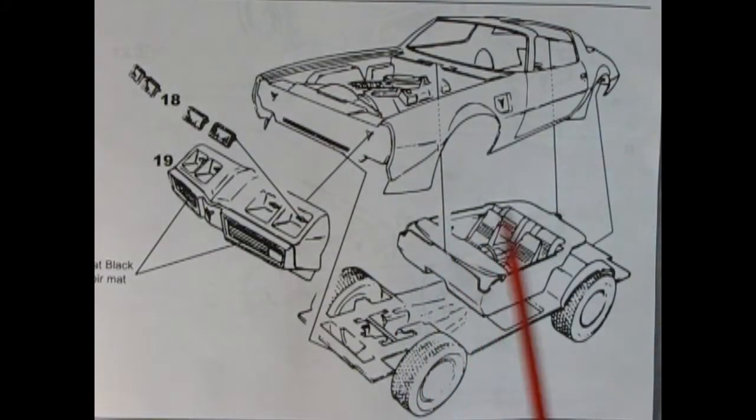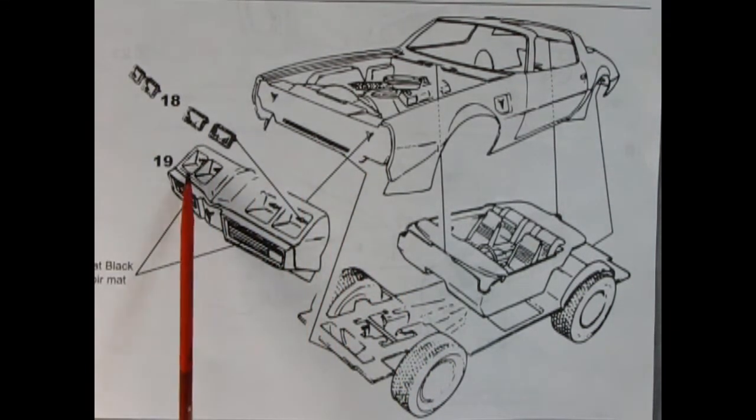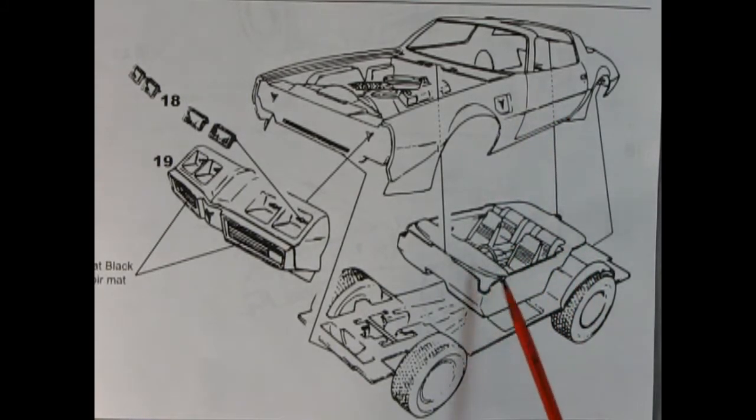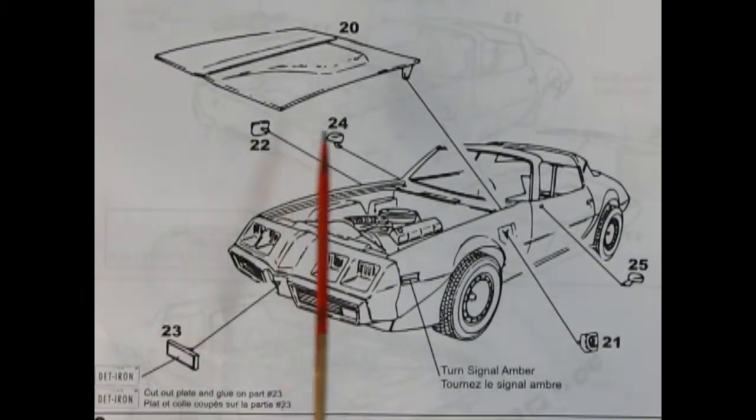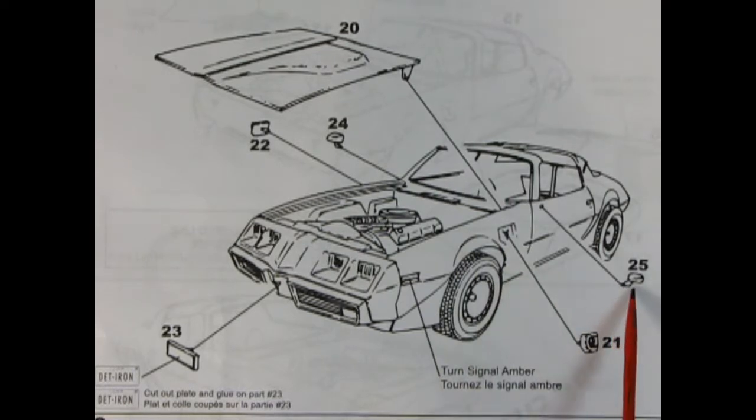Now this panel shows our Pontiac front end being snapped into place with the nice square headlights that pop in there. And then our body drops down onto the interior as well as the chassis. Our next panel shows the hood being snapped into place. It hinges here on the back. We have our side view mirrors which pop in those holes, and then our little sugar scoops which will go up here on the top of the front fenders.